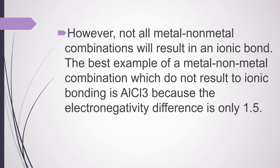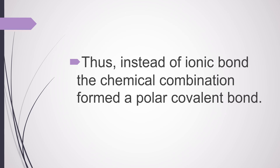The best example of a metal–non-metal combination which does not result in ionic bonding is AlCl, because the electronegativity difference is only 1.5. Thus, instead of an ionic bond, the chemical combination forms a polar covalent bond.